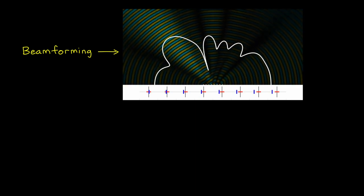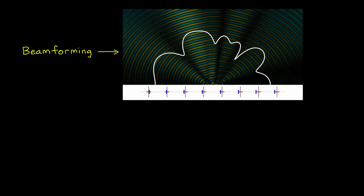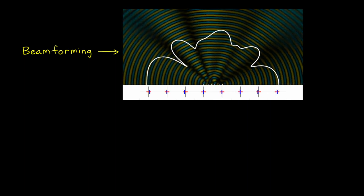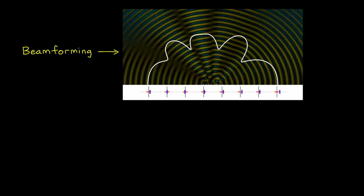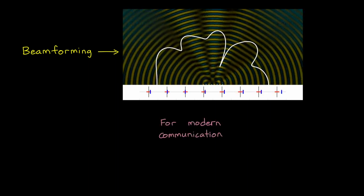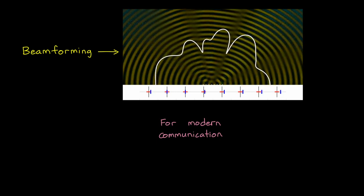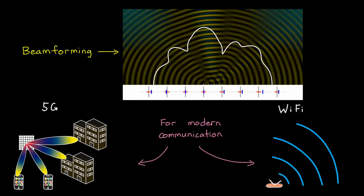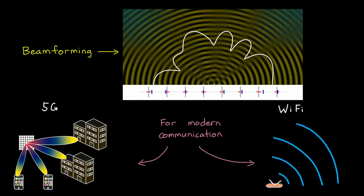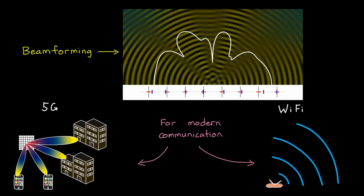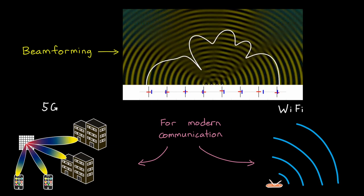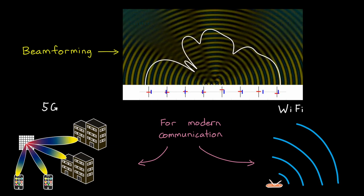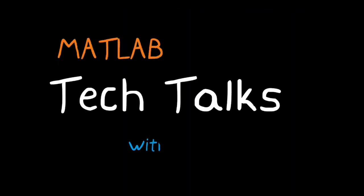Now that we have an understanding of what beamforming is, and at least conceptually how it's achieved with gain and phase shifts, in this video I want to walk through how it can be used to overcome some of the problems that we face with modern communication systems like 5G and Wi-Fi. Again, we're going to focus on concepts in this video rather than the equations themselves, but I think it'll still be pretty interesting, so I hope you stick around for it. I'm Brian, and welcome to a MATLAB Tech Talk.